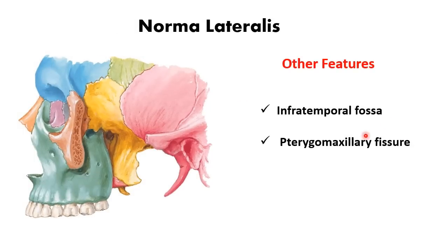The infratemporal fossa lies just below the zygomatic arch. Medially it is bounded by the lateral pterygoid plate and laterally by the mandible. The pterygomaxillary fissure is a triangular gap between the posterior surface of the maxilla and the lateral pterygoid plate of the sphenoid bone. The infratemporal fossa communicates with the pterygopalatine fossa through this fissure.